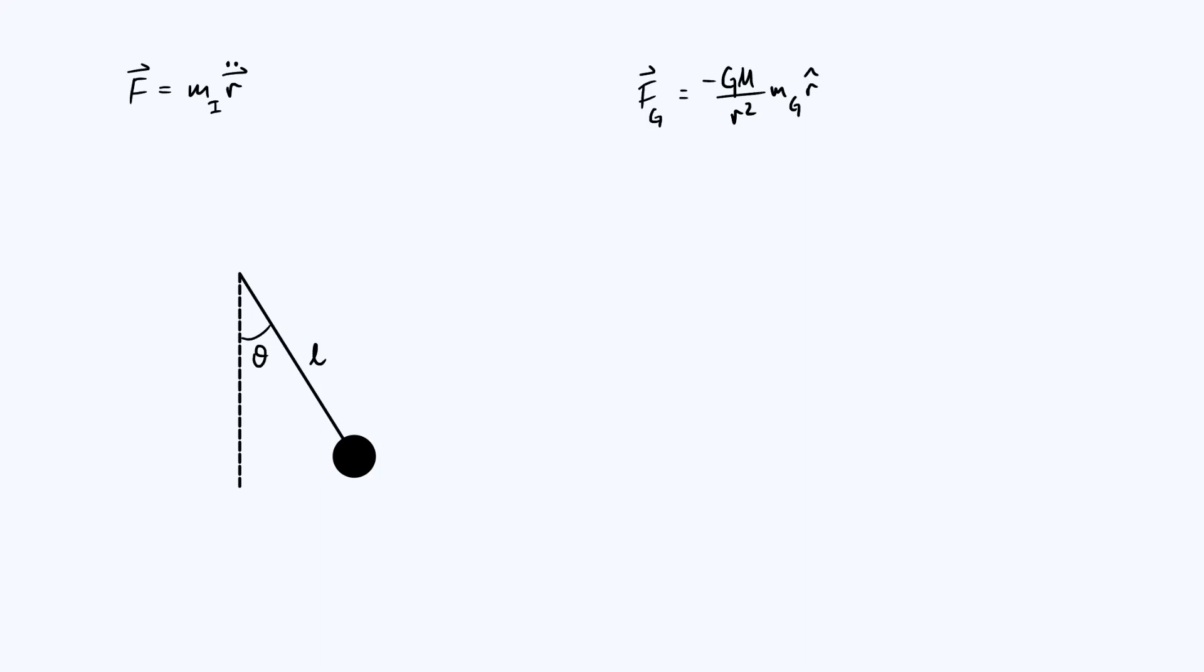As an example of how things would be if the inertial mass and gravitational mass were indeed completely distinct quantities, let's consider the classic example of the simple pendulum. This is a good thing to be talking about because it's something that Newton himself spent a lot of time doing experiments with. We have a string or rod of length L making an angle theta to the vertical, and we have a bob at the end with a gravitational mass and an inertial mass.